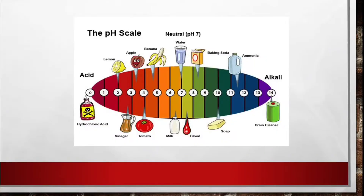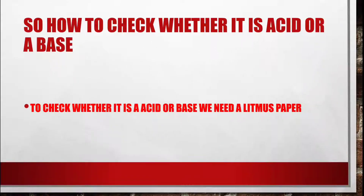There is a pH scale to identify the acidity or basicity of a substance. Values from 0 to 6 indicate substances that are acidic in nature, and 8 to 14 indicate substances that are basic in nature. A pH of 7 is neutral, which corresponds to water.